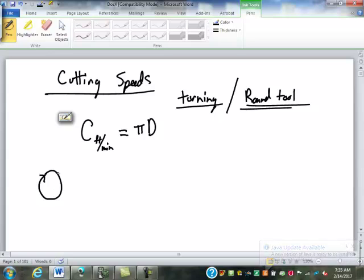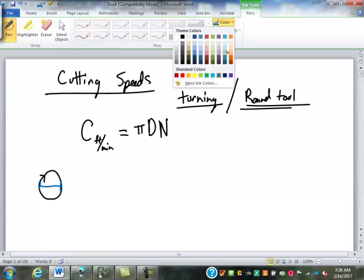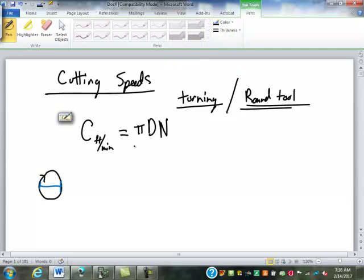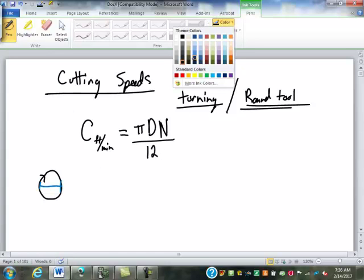Now, if it's turning at N RPMs, it's going to turn N times a minute. So the circumference times the RPM is going to give us the distance that the surface travels in one minute. So D is either the diameter of the stock in the lathe or the diameter of the tool. The diameter is going to be in inches, and our cutting speed is in feet per minute. So we divide that by 12 to turn that into feet.